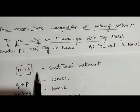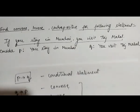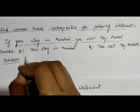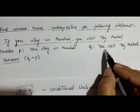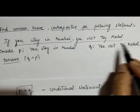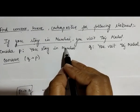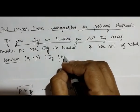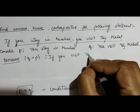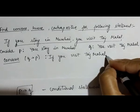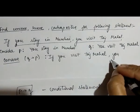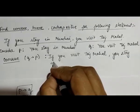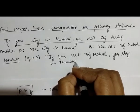The converse is 'if q then p', so we make it: 'if you visit Taj Mahal then you stay in Mumbai'. This is the converse statement.